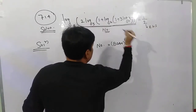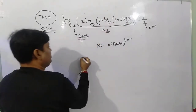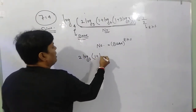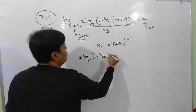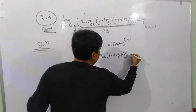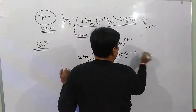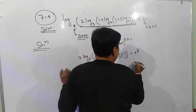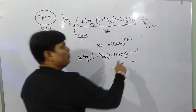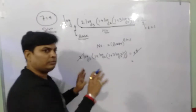Base to the power — तो number के जगह उतार दीजिए, यहां से यहां तक। लिखेंगे: 2 log base 3 of (1 + log base 2 of (1 + 3 log x base 3)) is equal to base to the power RHS. Base क्या है? 4. तो 4 to the power 1/2. अब समझदार बनिए — 4 to the power 1/2 means 2. Cancel होकर 2 मिलता है।